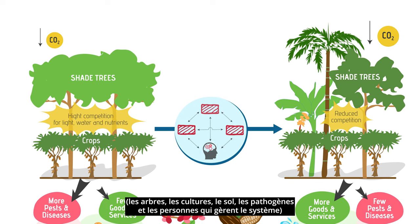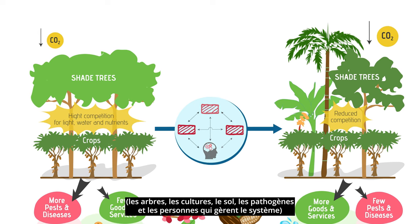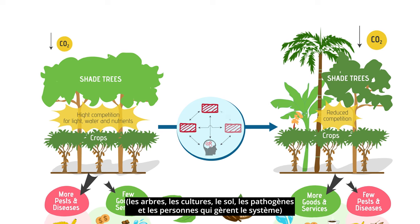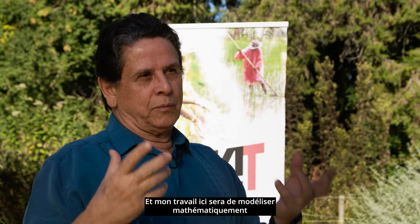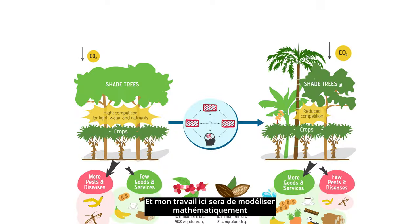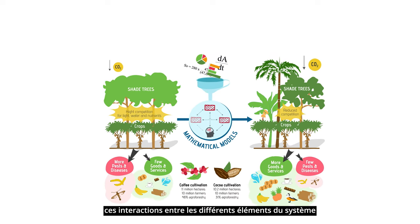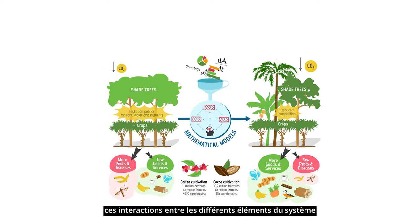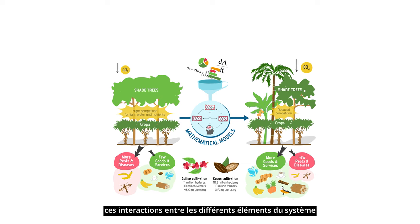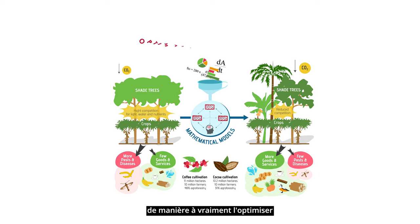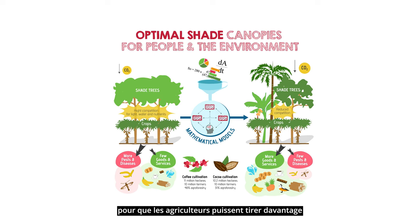The trees and the crops and the soil and the pathogens and the people who manage the system. My work here will be to model mathematically how those interactions between the different elements of the system work, so that you can really optimize it in a way that farmers can make more out of their own systems.